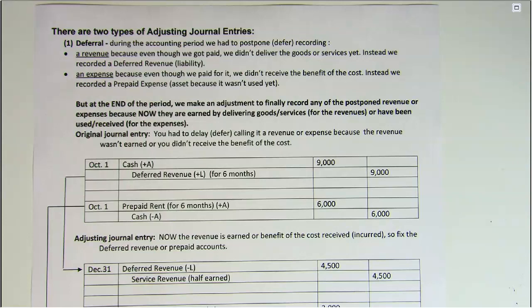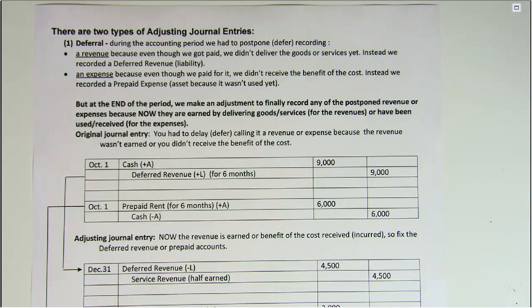If we think back to chapter three, we learned that if we get paid before we deliver goods or services, we have to delay or defer recording revenue. We can't credit a revenue account because we haven't earned it yet, so we record a deferred revenue, which is a liability, indicating in our accounting records that we owe our customers the goods or services. That's what we learned in chapter three.